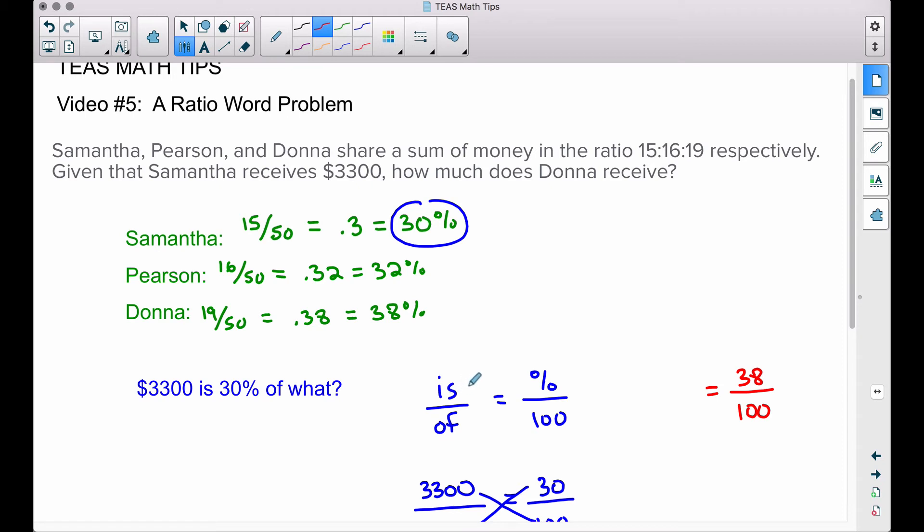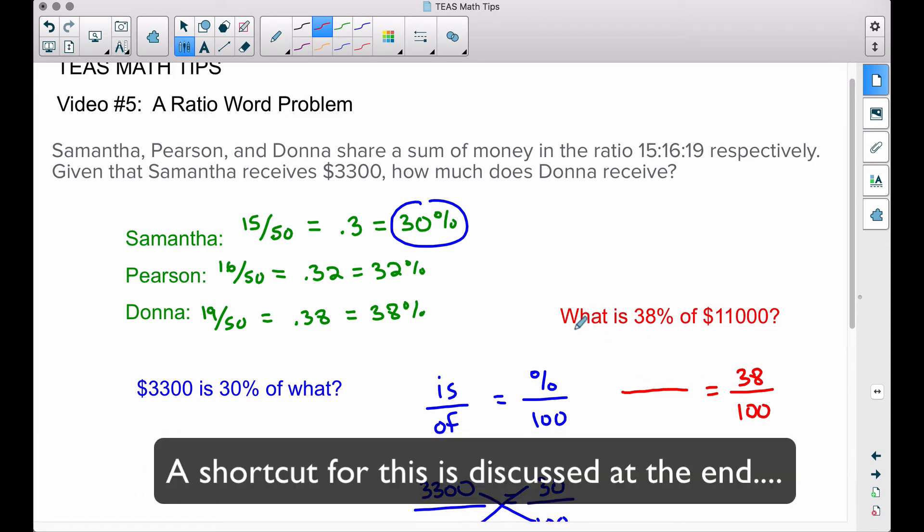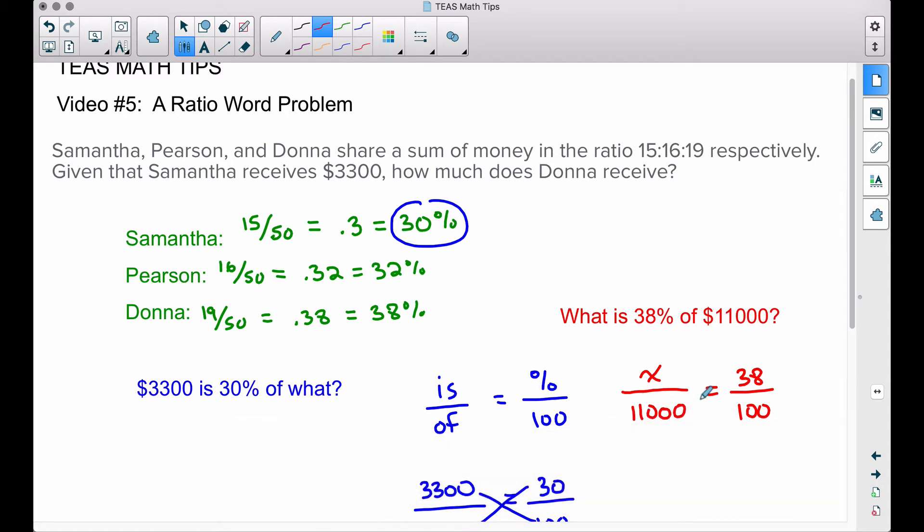We don't know what the is part is for Donna. This is the question that we're asking ourselves now: what is 38% of the total amount of money to be dispersed? So we don't know what the is part is. What is, no idea, put an x. Of $11,000, so I'm going to put my 11,000 in the denominator.